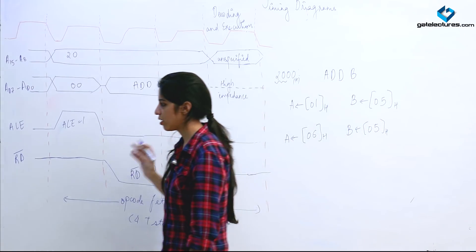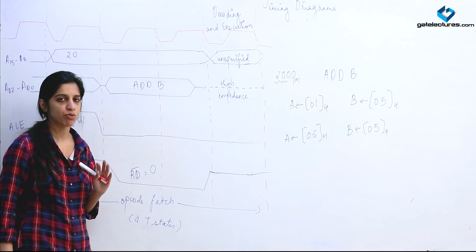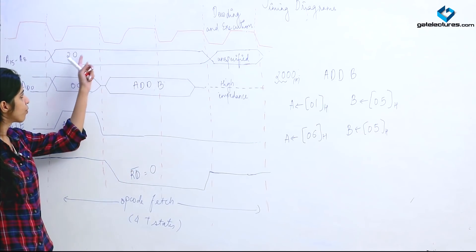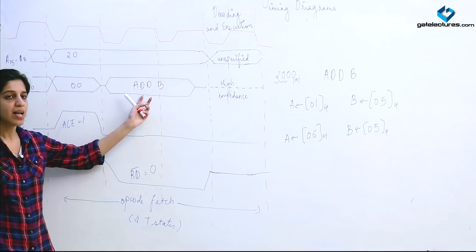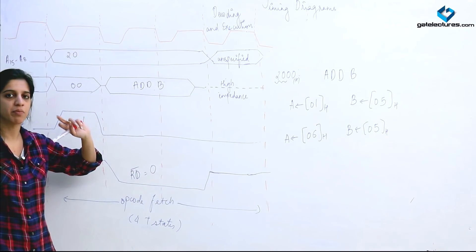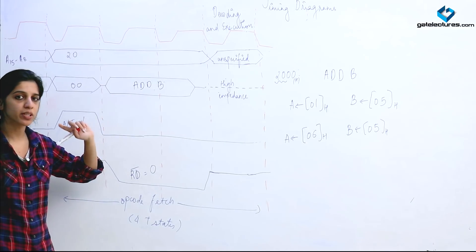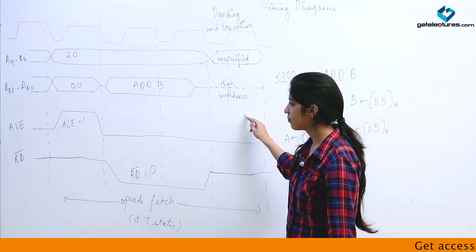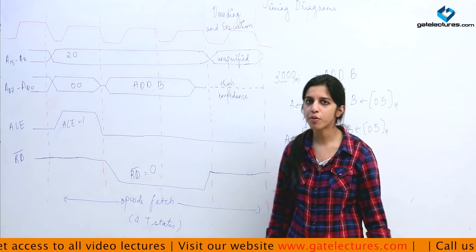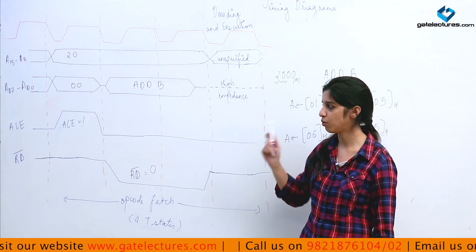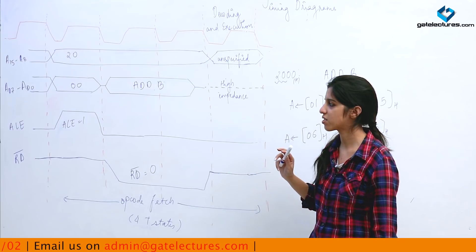For any instruction, any opcode fetch cycle takes exactly 4 T-states. In the first T-state, the address is put on the bus with ALE = 1. In the second and third T-states, it takes 2 T-states to read from memory. In the fourth T-state, decoding occurs. Generally, memory read requires 3 T-states, and memory write also generally requires 3 T-states.